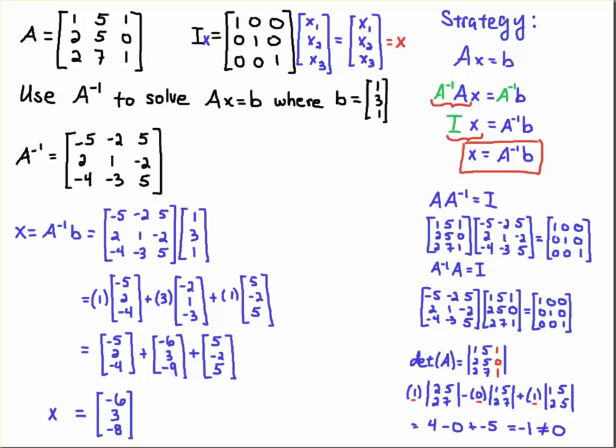Here's A inverse that I'd computed previously. And then I just go about and I perform the matrix multiplication. So I take one, I multiply by the first column. I take three, multiply by the second column, take one, multiply by the third column. When I do that, I get minus five, two, minus four for the first column. Three times this vector gives me minus six, three, minus nine. One times the third column gives us five, minus two, five. And then I just add across the top entries, the top entry, the middle entry, and the bottom entry, and I get minus six, three, minus eight is the solution to this system. So X equals minus six, three, minus eight.